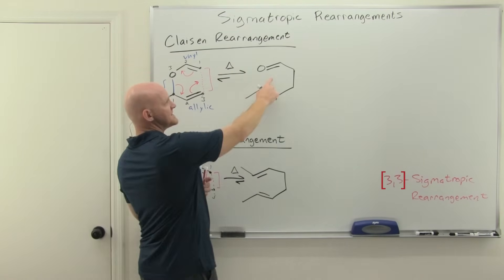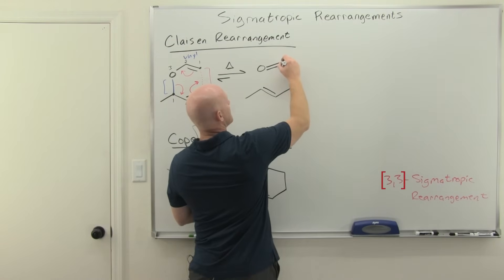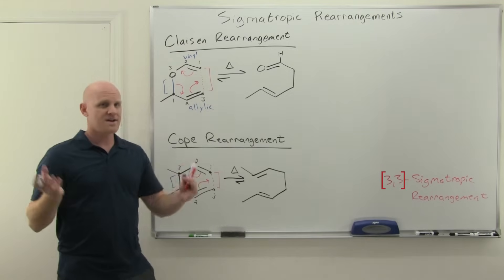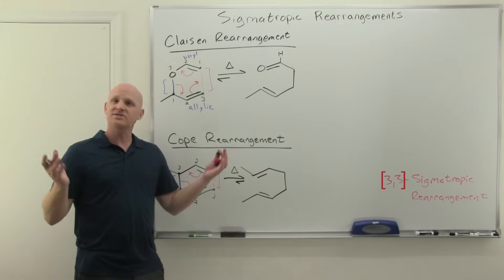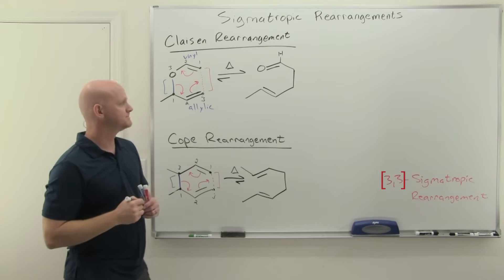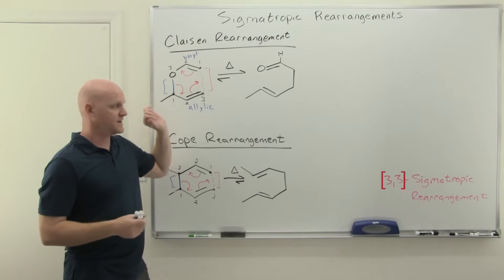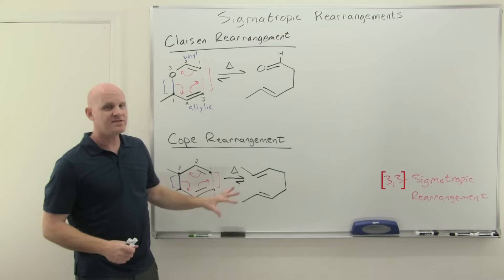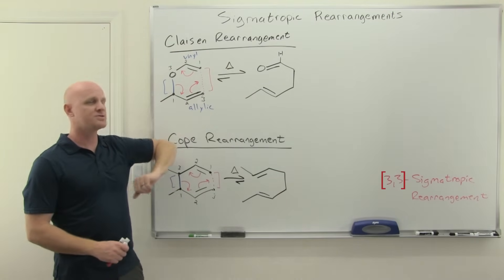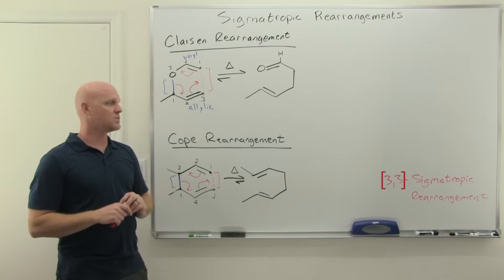Technically this product is an aldehyde, and if you form an aldehyde, good practice to draw in the aldehyde hydrogen — the one time in organic chemistry we find it necessary to draw a hydrogen bonded to a carbon atom. So that's your typical Claisen, and I just wanted to show you the similarities and differences with the COPE. Both are 3-3 sigma-tropic rearrangements.